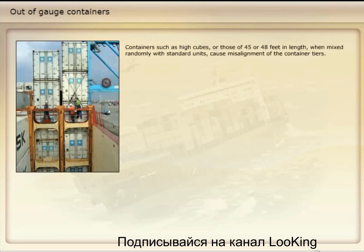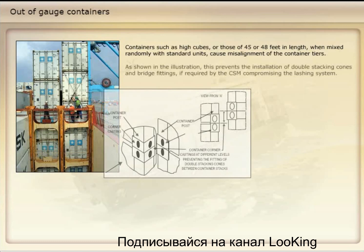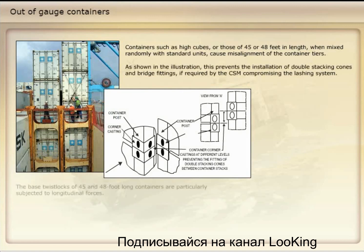Containers such as high cubes or those of 45 or 48 feet in length, when mixed randomly with standard units, cause misalignment of the container tiers. As shown in the illustration, this prevents the installation of double stacking cones and bridge fittings, if required by the CSM, compromising the lashing system.